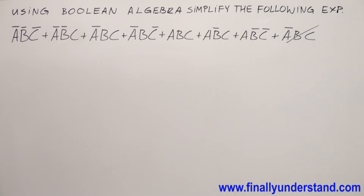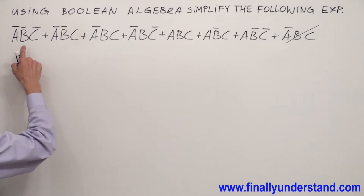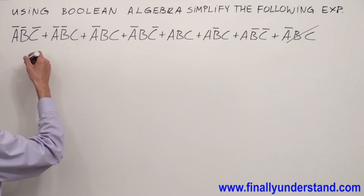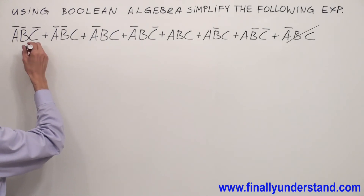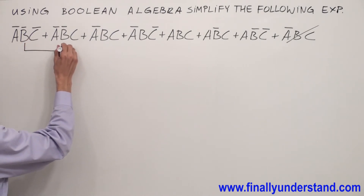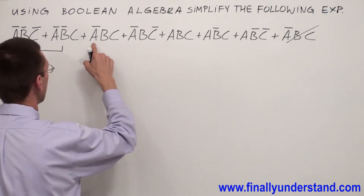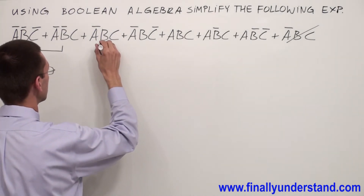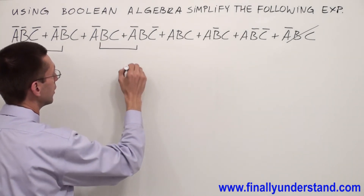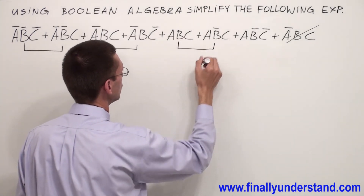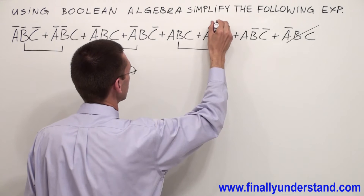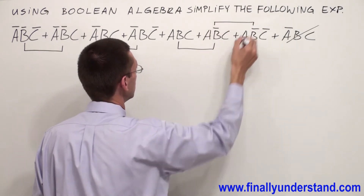Now let's take a look — maybe another one repeats? I don't think so, so we can start factoring. I have A'B' in these two terms, I have A'B in these two terms, I have AC in these two terms, and I have AB' in these two terms.